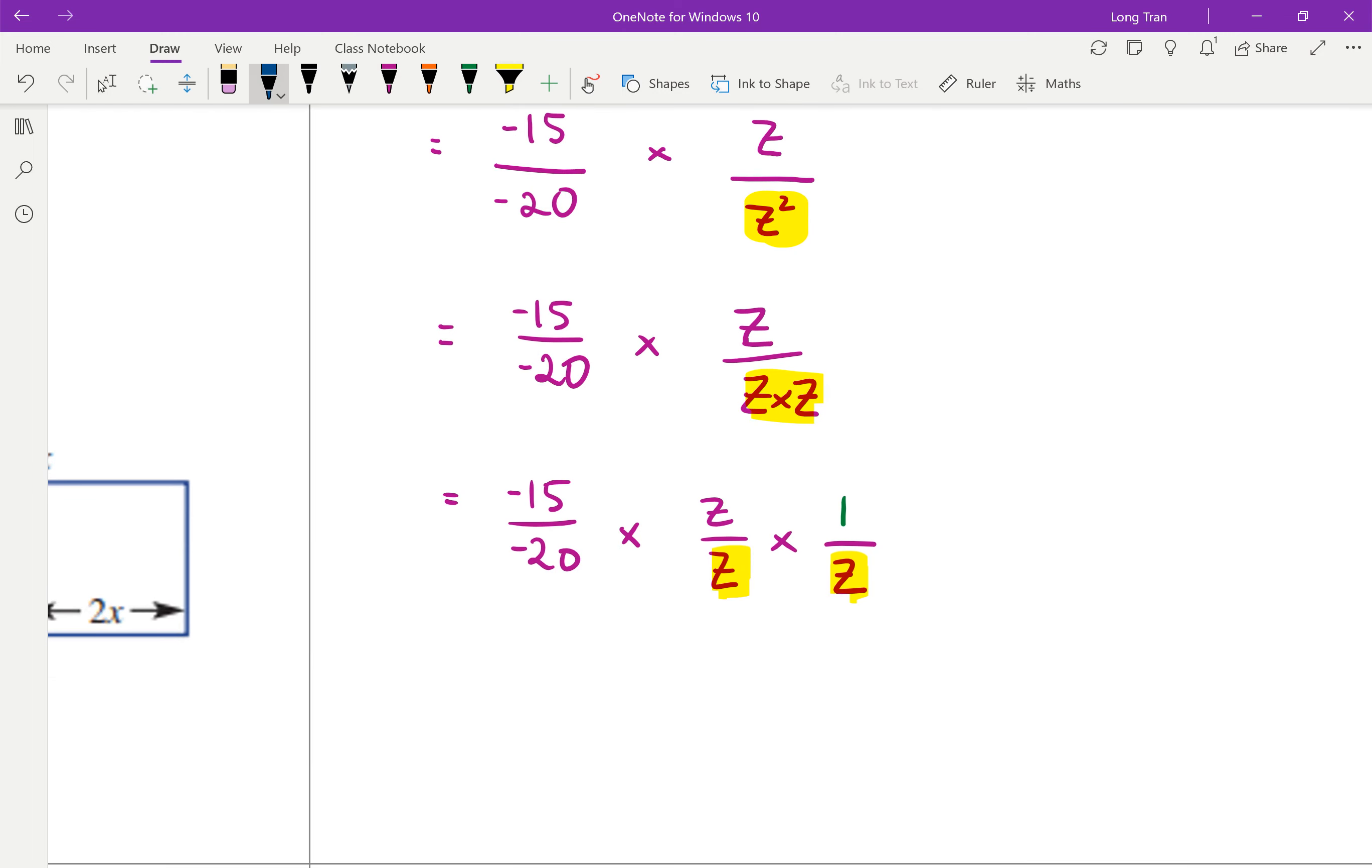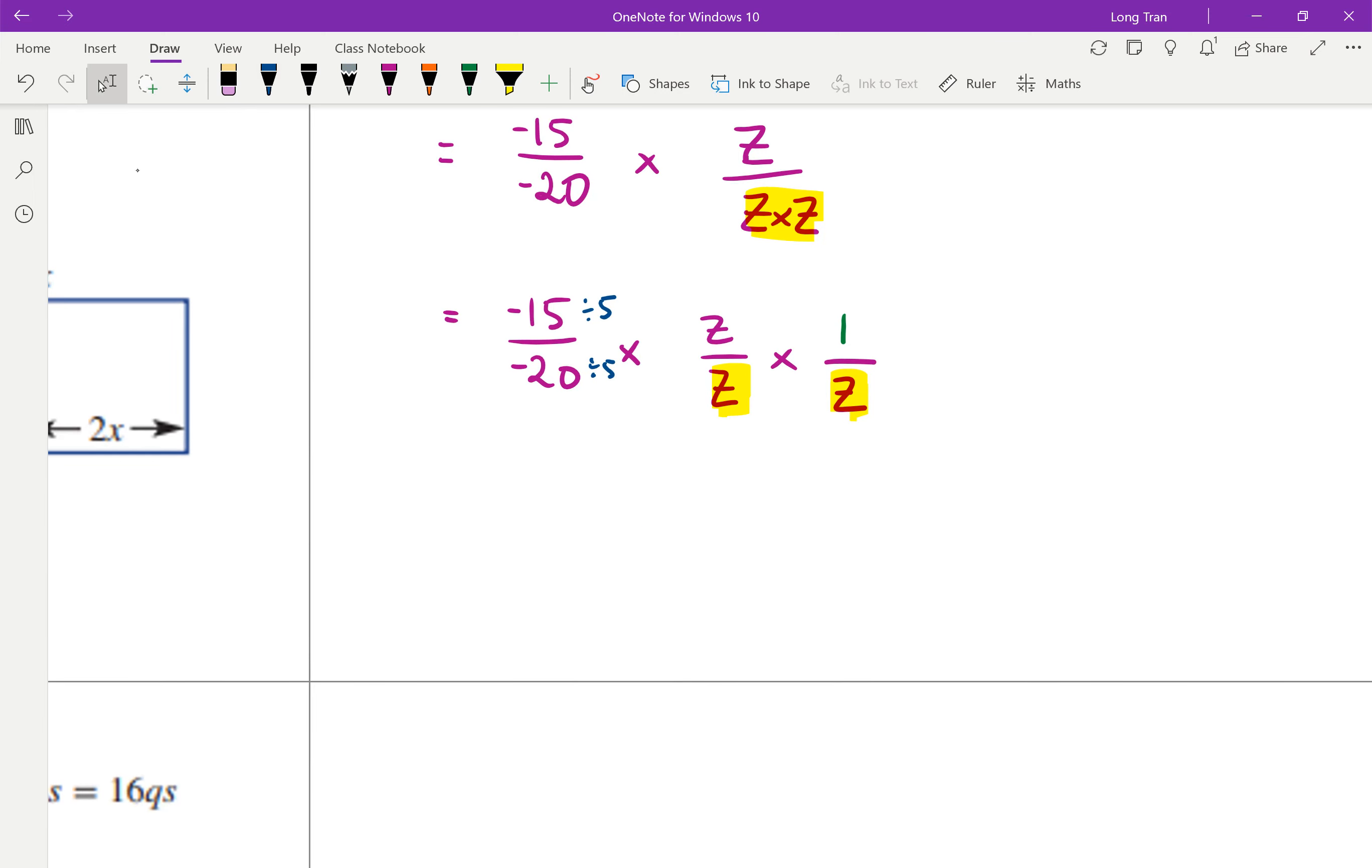And the reason why you do that is you can see, now, if you were to simplify it, what number goes into 15 and 20? Well, I know 5 goes into 15 and 20. And here you can say, 5 goes into 15 3 times, 5 goes into 20 4 times, but notice, double negative is positive. Okay, so negative divided by negative is already a positive, it's just 3 quarters.